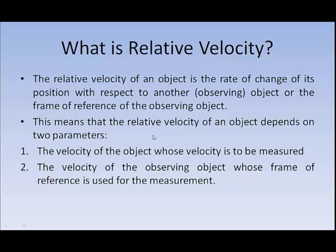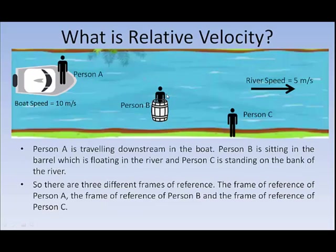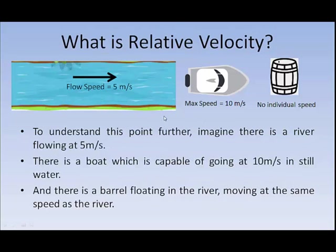To explain this, let us look at an example. There are three things: a river where the water is flowing at 5 meters per second, a speedboat with a maximum speed of 10 meters per second, and an empty barrel that just floats in the river — it has no means of propulsion. So the barrel does not have its own speed; it will move at the same velocity as the river itself.